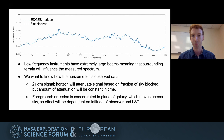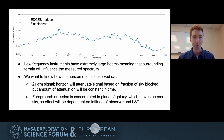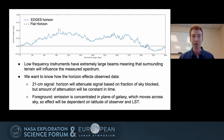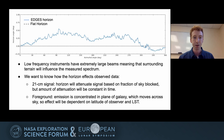By beams, I just mean the sensitivity of the instruments to different portions of the sky. These very large beams are by design because we're trying to measure the sky-averaged component of the signal. But it also means that these instruments are going to be sensitive to effects from objects that are very far away from the zenith or the pointing of the instrument. One of these effects that can potentially have an effect on observations is the horizon.